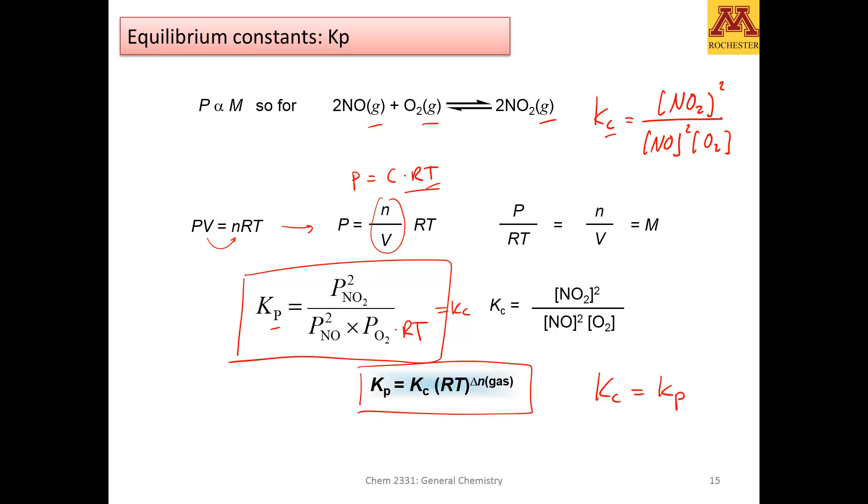The take home message is that you will see equilibrium constants in some reactions where all the reactants and products are gases, that equilibrium constant may be expressed as a function of pressure. We call that Kp, and that Kp will only be equal to Kc if the number of reactants and products are the same. If not, you will carry around an RT factor either in the numerator or denominator.